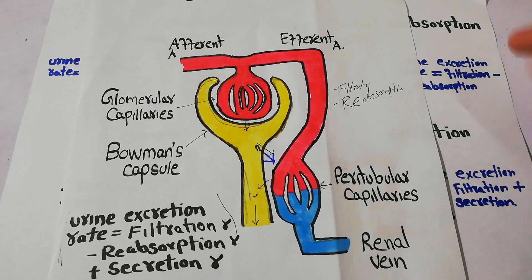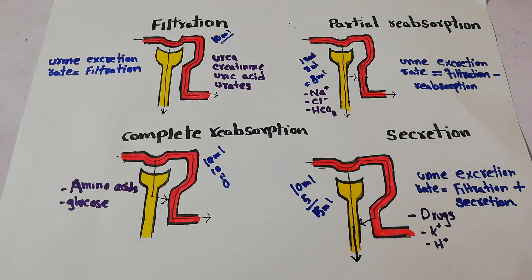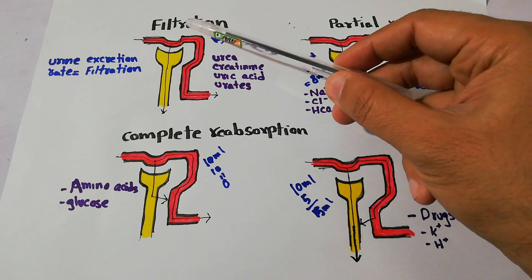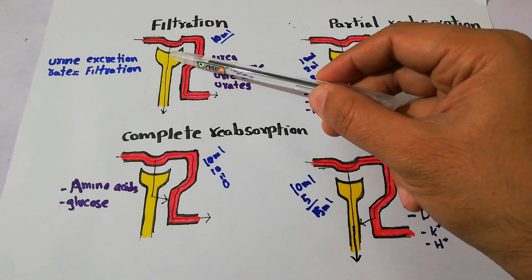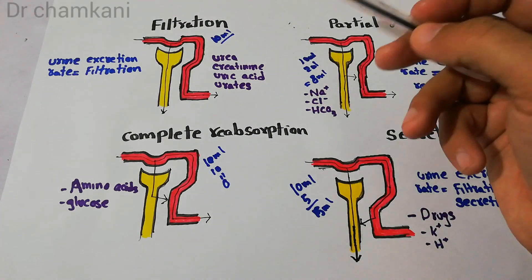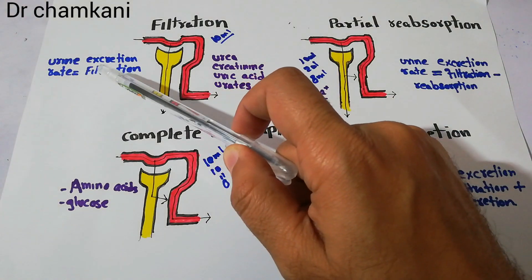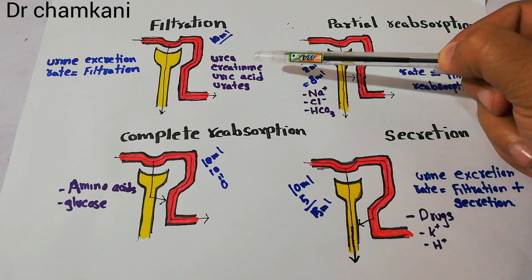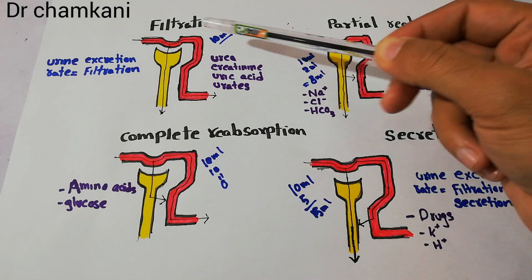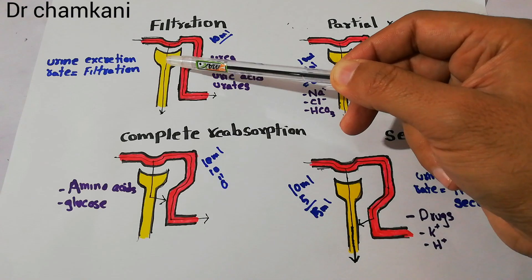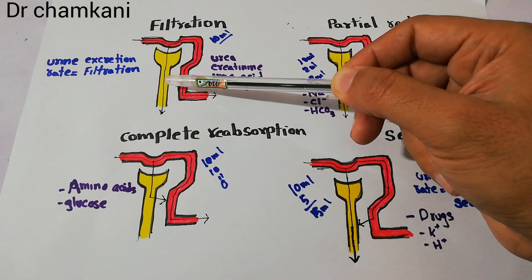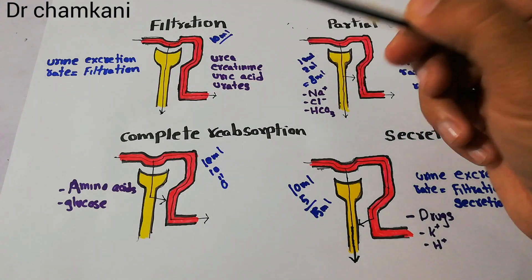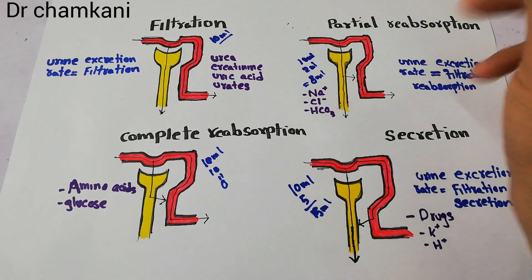We will discuss those substances which depend on filtration, reabsorption, and secretion. If a substance is only filtered — filtration occurring at the glomerulus in the Bowman's capsule but reabsorption or secretion is not occurring — then its urine excretion rate will be equal to its filtration rate. Examples of those substances include urea, creatinine, uric acid, and urates. These substances, once filtered at the Bowman's capsule, are neither reabsorbed nor secreted into the renal tubules, and their urine excretion rate depends entirely on their filtration.